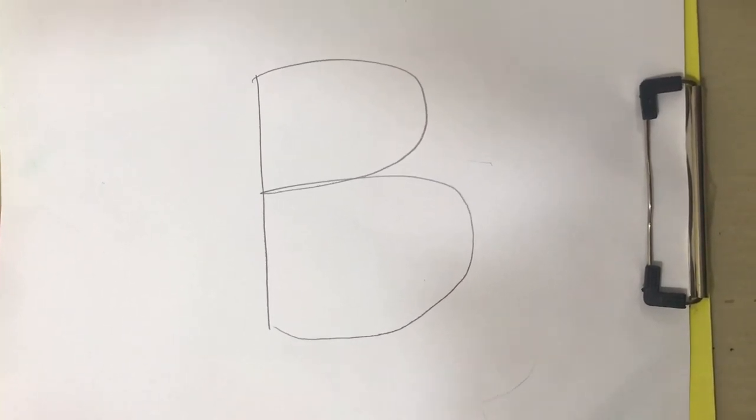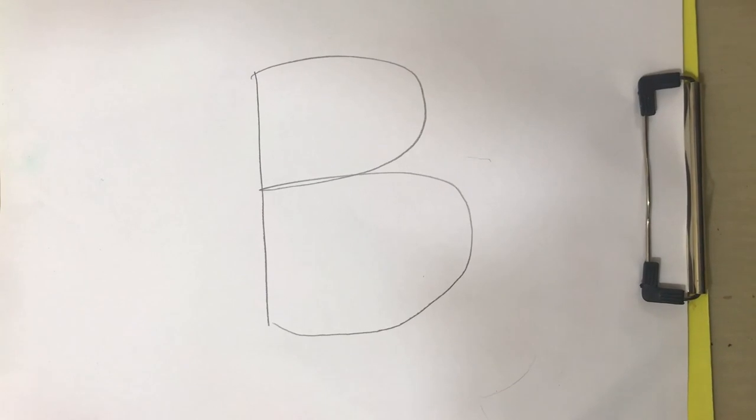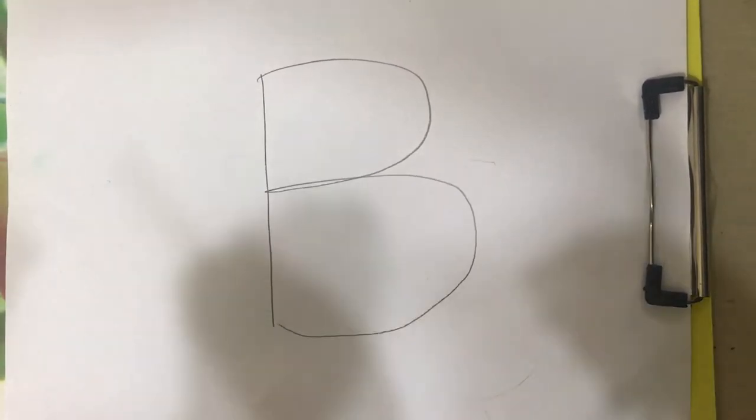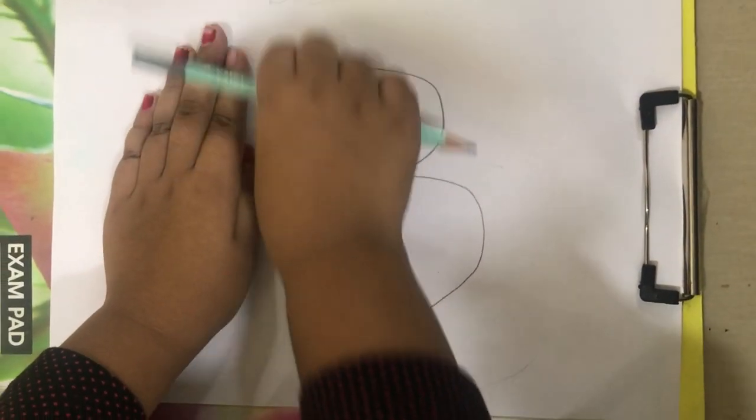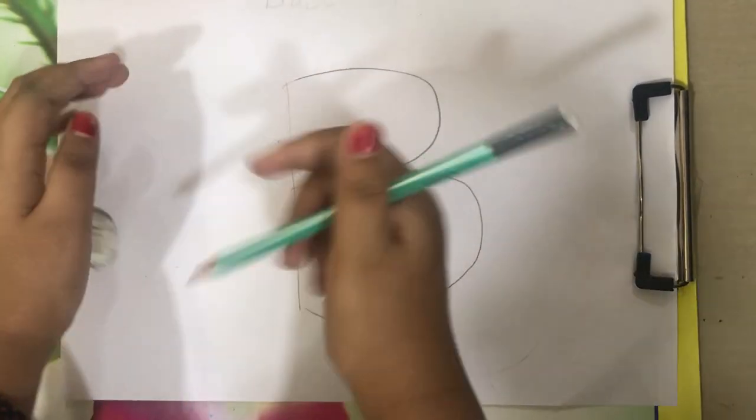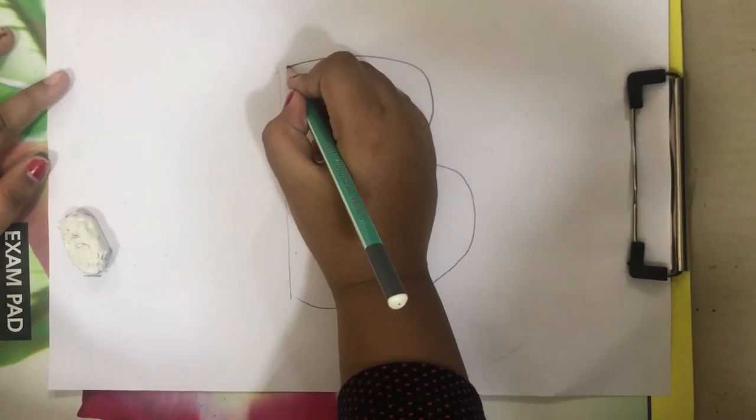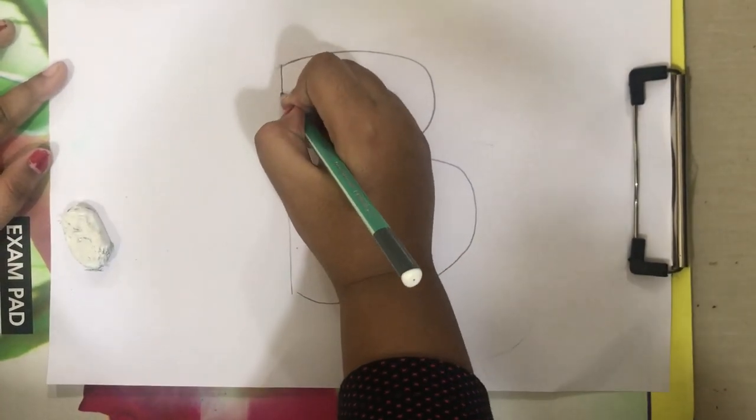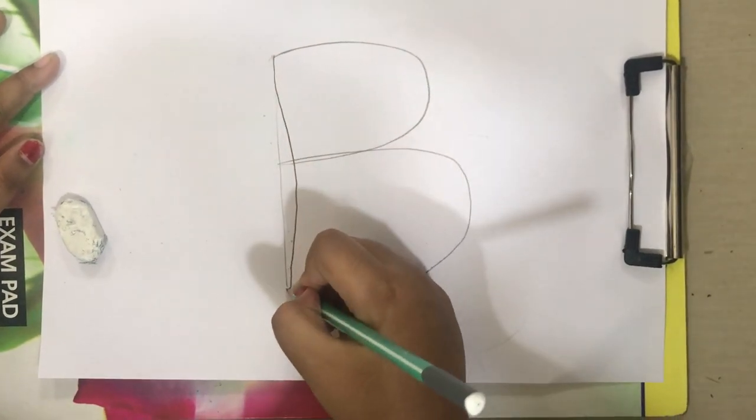Now I'm going to draw step 2. You have to rub the line and you have to do like this.